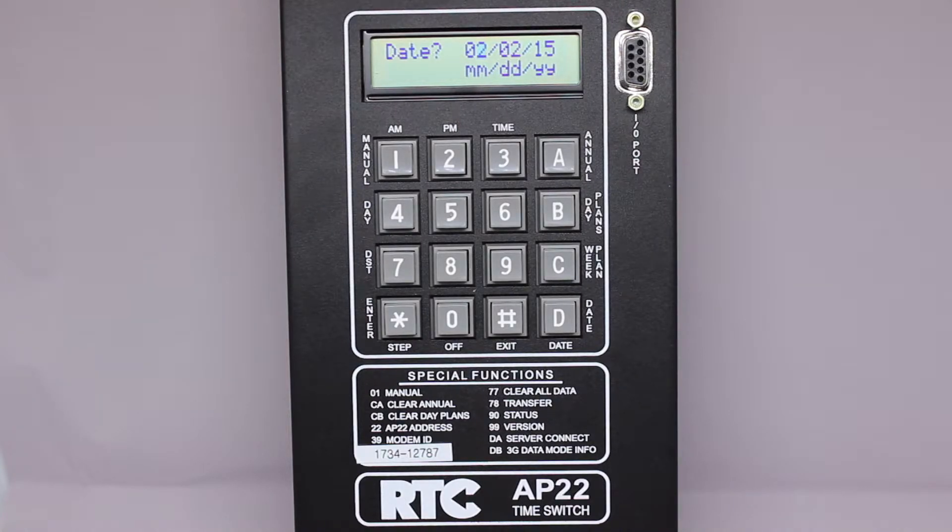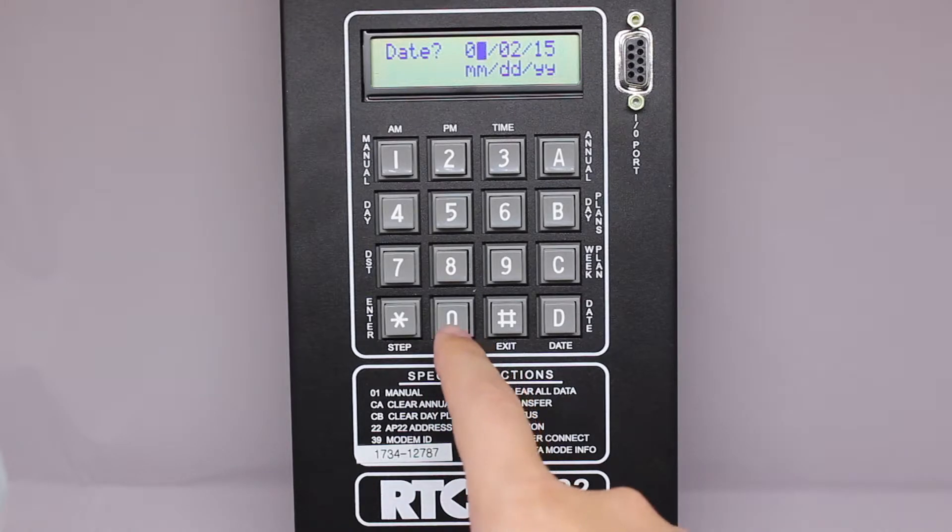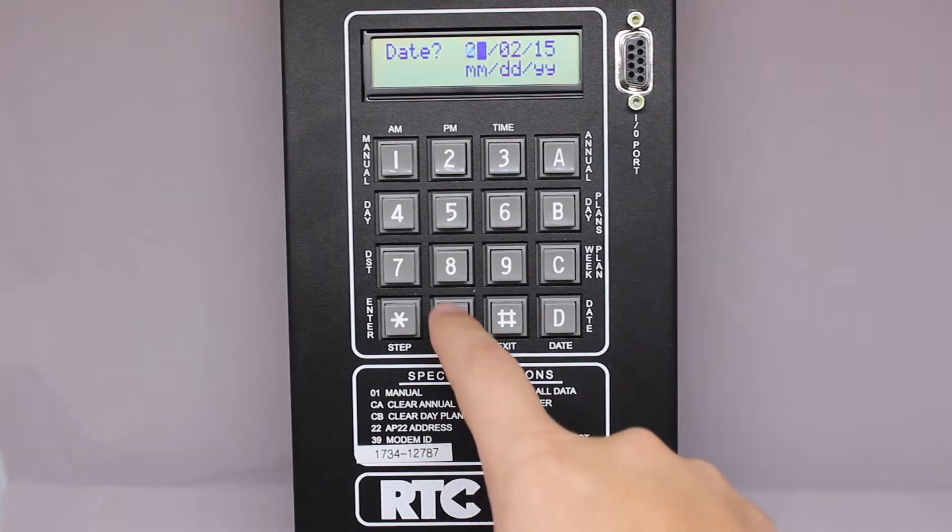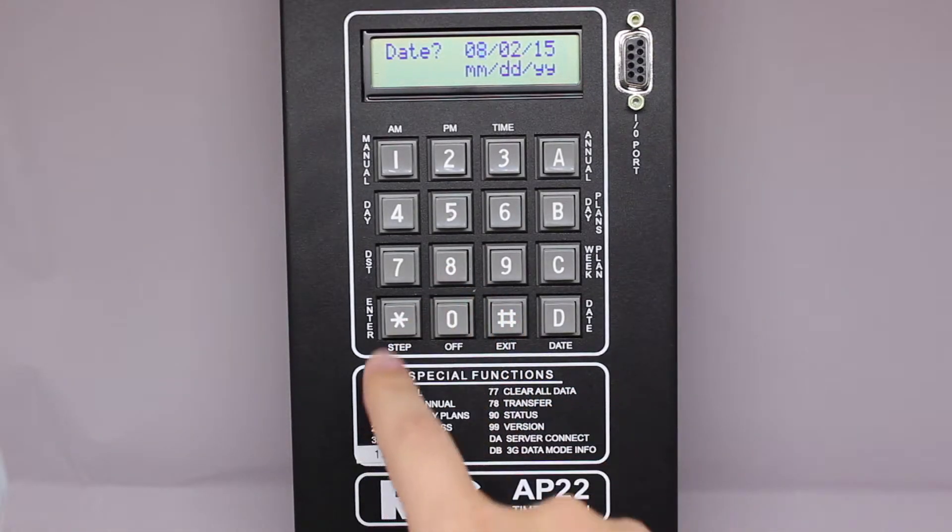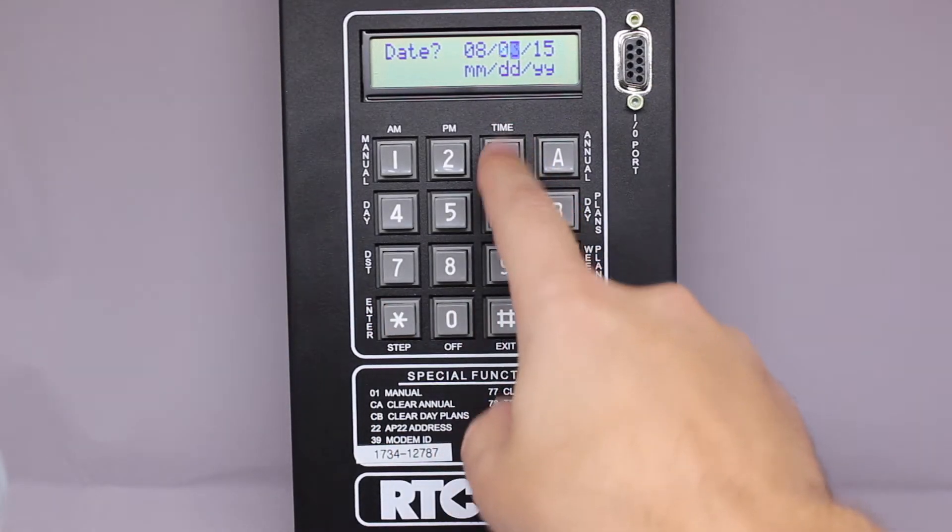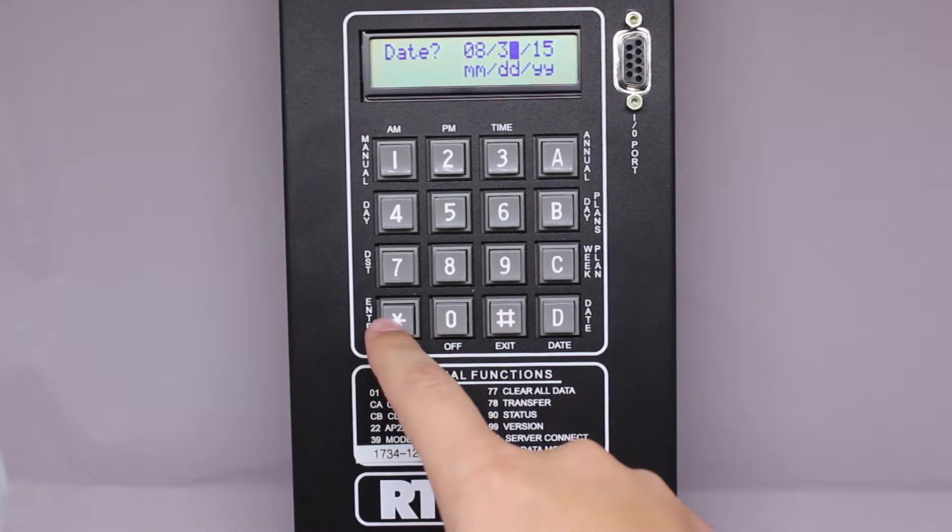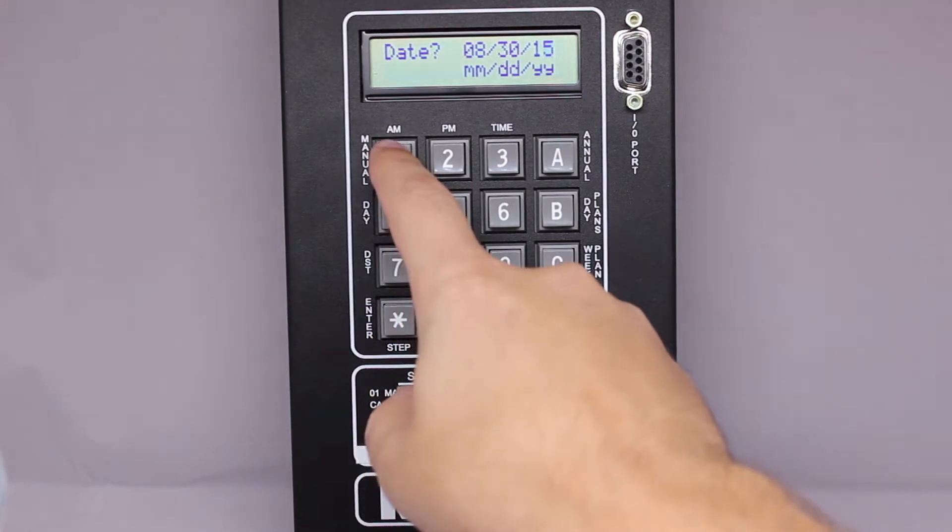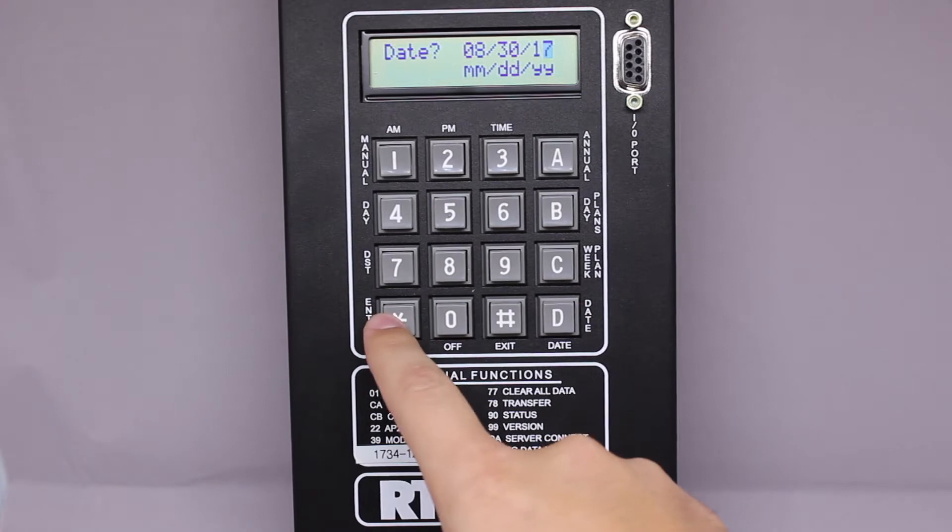Type in the correct month if it is incorrect, which in our case is 08 for August. Press the star key to move on to the date. We will press 30 for the 30th, followed by the star key, and finally 17 for 2017, and then press star.